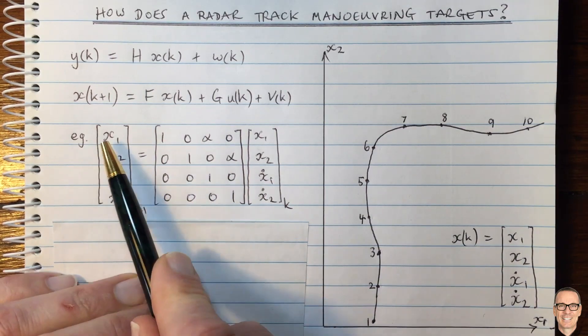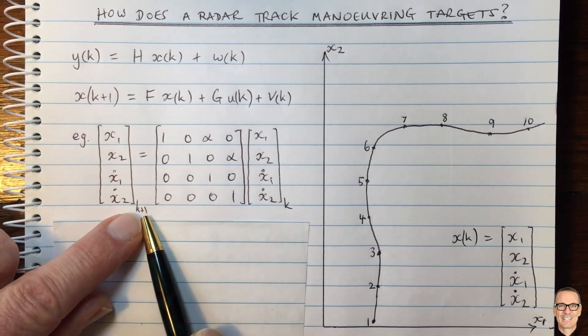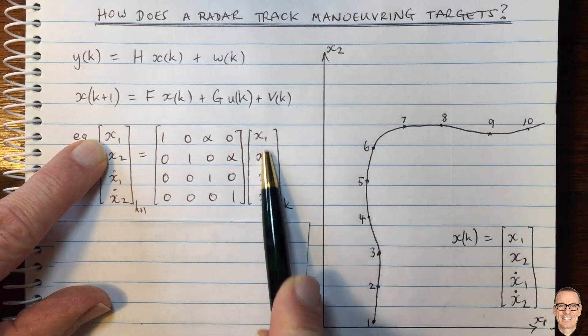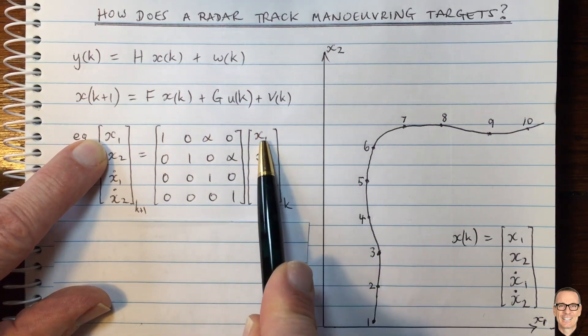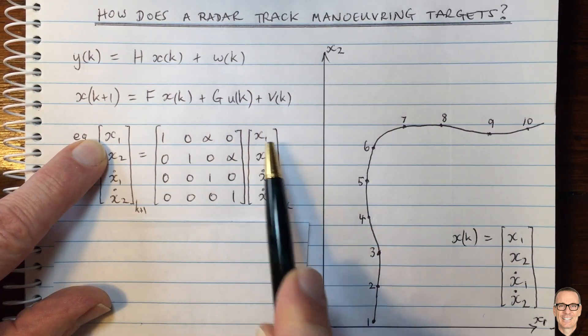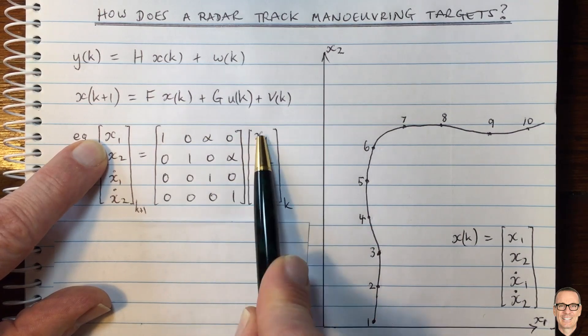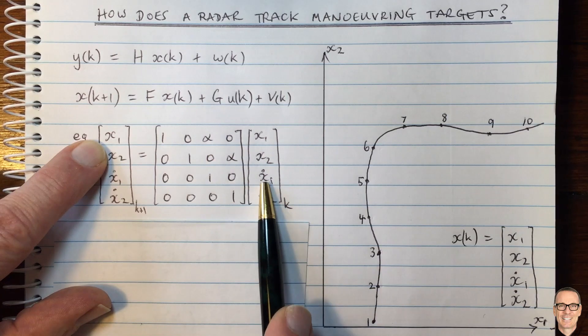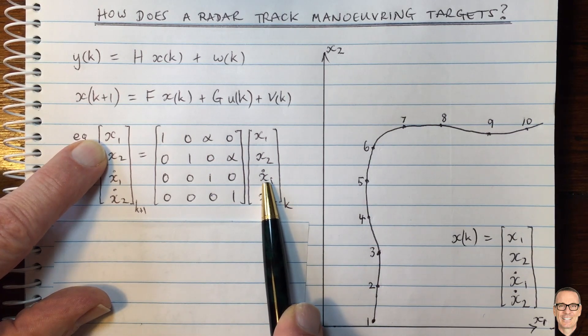Why is that? Well, because at time k plus 1, the next x1 location is going to equal this row times the vector, which gives you the current location because this is the x1 location at time k. And so 1 times that, nothing times that, plus alpha times the velocity in the x1 direction.